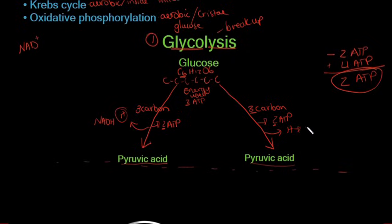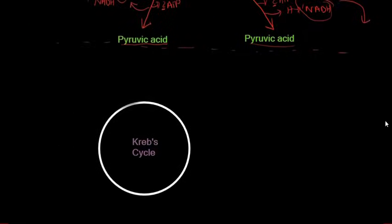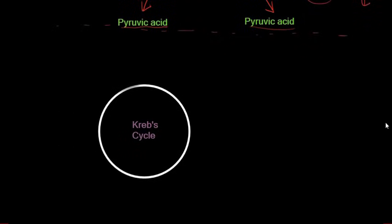One NADH is produced on each side, giving two NADHs total. These NADHs go directly to the third phase — oxidative phosphorylation — carrying those hydrogens there. This completes glycolysis and we move into the second phase: the Krebs cycle.